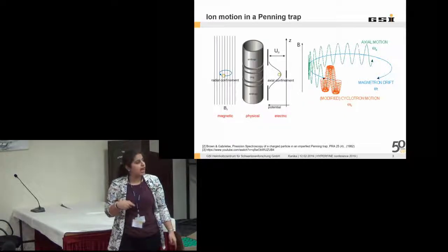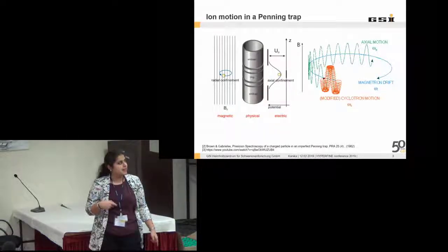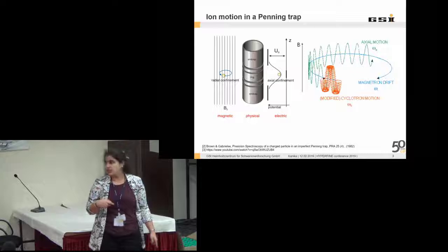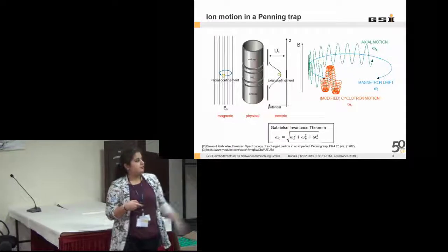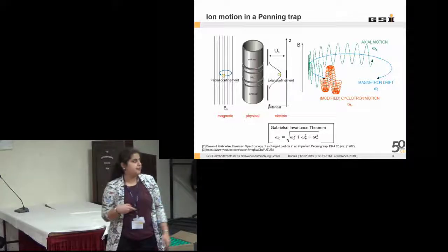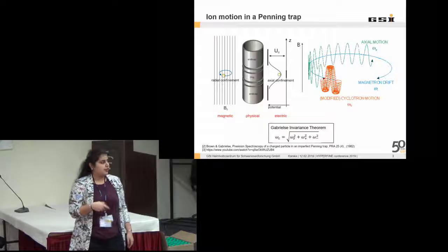Thus we have the axial motion and the modified cyclotron motion, because we have electric field present along with the magnetic field, and we also have a magnetron drift. We also have a Gabriel's invariance theorem which relates all these three frequencies to give us the free cyclotron frequency.